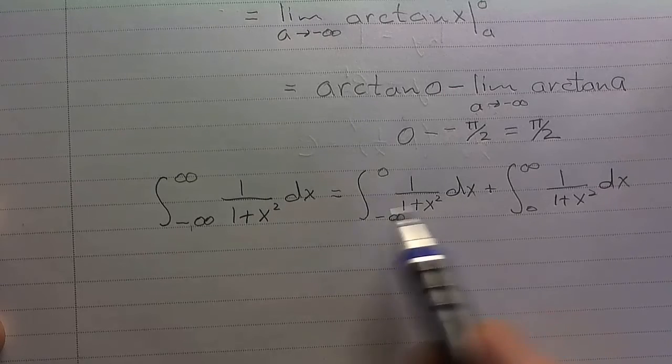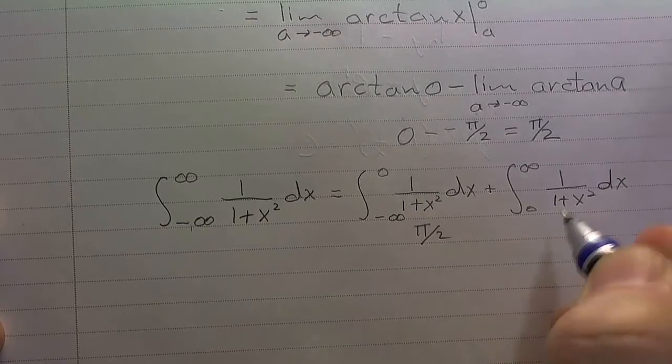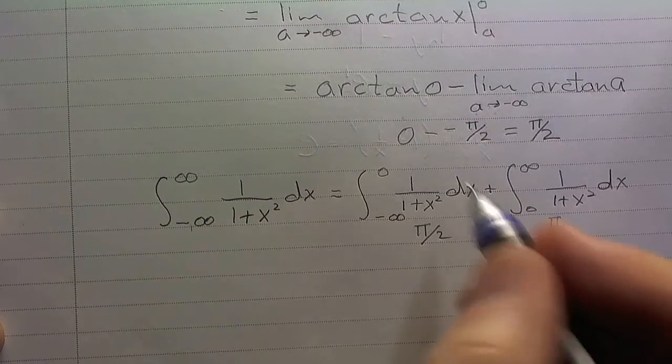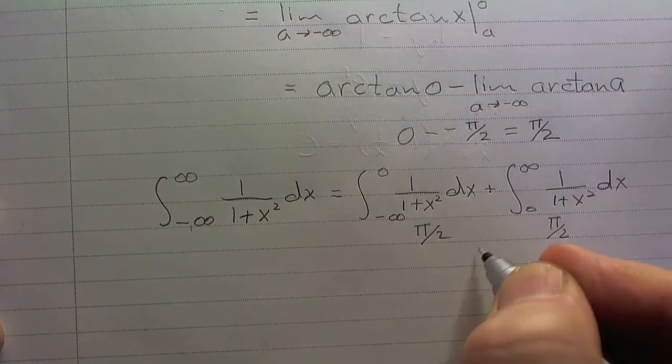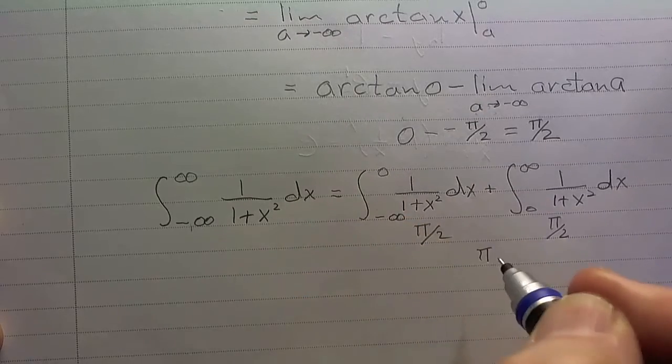Now we've already solved this – both of these. And we found that this is pi over 2, and we found that this one's pi over 2. So, I mean, we already did the work. There's no use doing it again. So this whole thing would just be pi. This whole integral here would just be pi.